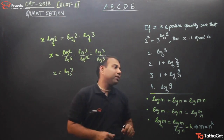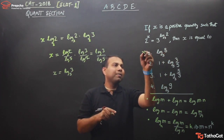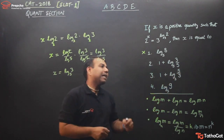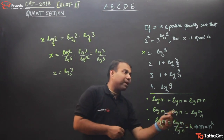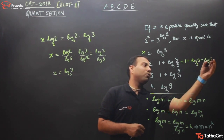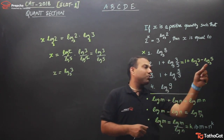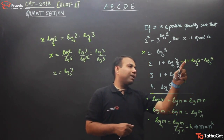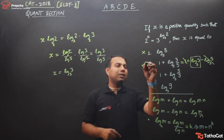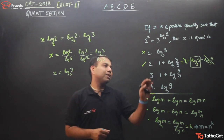That is our final answer. Checking the options: the first option doesn't match because it has 3 raised to 8, not 3. The second option has 1 plus log base 5 of 3/5. Using log m/n = log m − log n, this becomes 1 + log 3 base 5 − log 5 base 5. Since log 5 base 5 = 1, it cancels with the 1, leaving log 3 base 5. So option 2 is the right answer.